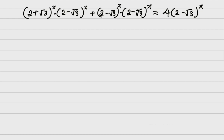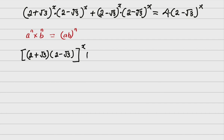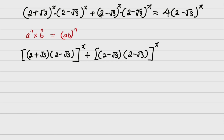Now there is this understanding from indices: if I have a^n times b^n, as far as their powers are the same, it's going to be (ab)^n. That is exactly what I'm going to use. So I'm going to have (2 plus root of 3) into (2 minus root of 3), all raised to power x, plus (2 minus root of 3) squared raised to power x, equals 4 into (2 minus root of 3) raised to power x.